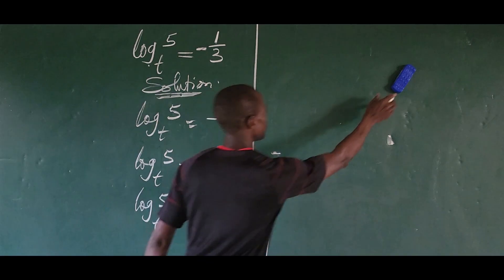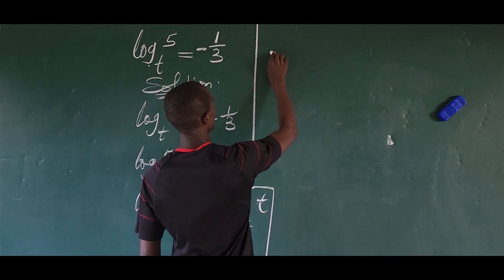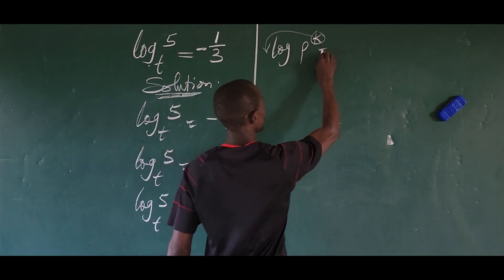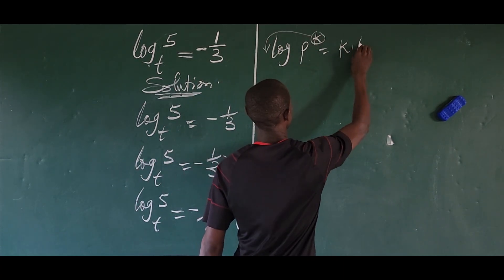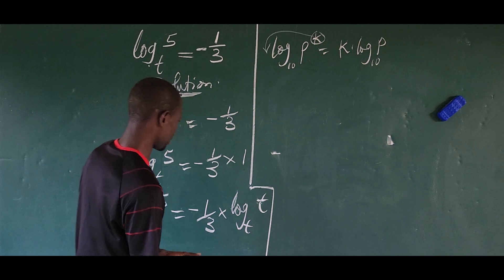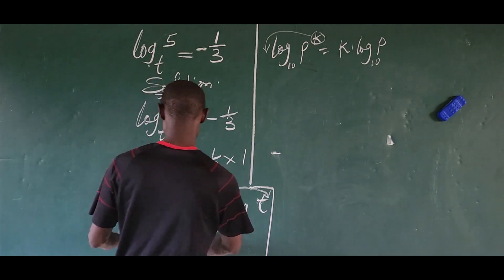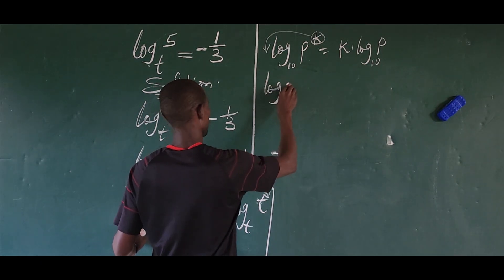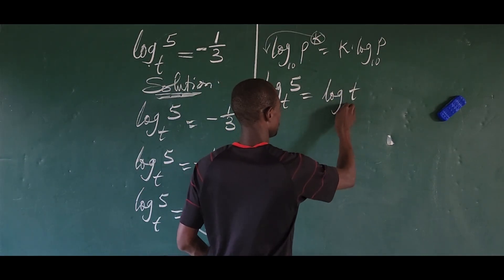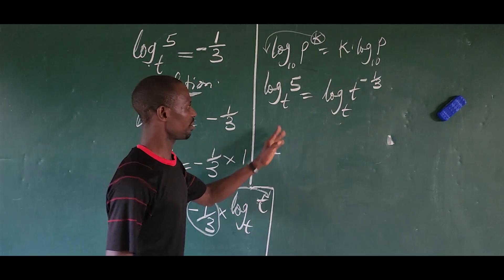There is another law in logarithms which says that if you have log of p to the power of k, you move the exponent out front, giving you k times log p — with your natural base. So in that regard, I want to move the exponent to this side. This gives us: log 5 base t equals log of t raised to the power of minus 1 over 3, base t.